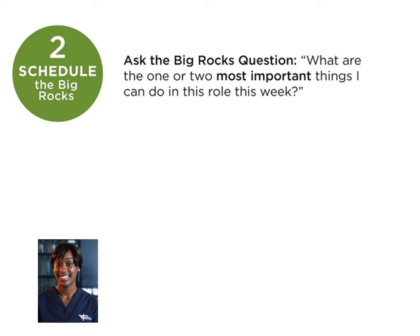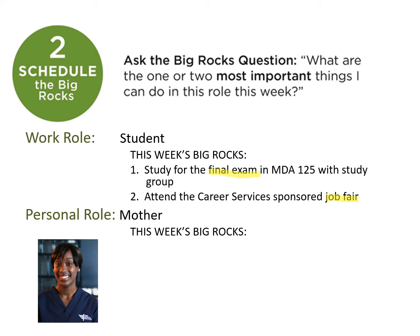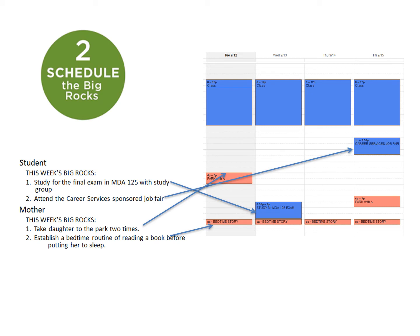When scheduling the big tasks, ask: what are the one or two most important things that I can do in this role this week? So here we have Sasha again. As a student, this week's big rocks were to study for her final exam and to attend a job fair. In her role as a mother, she was going to take her daughter to the park, work twice, and establish a reading routine at bedtime — one that's going to recur at the same time every day. Next, she went to the calendar and put her big tasks in first.